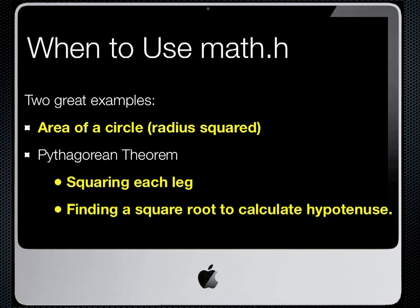Here are some examples of simple functions from math.h that we will use on a regular basis. The first one finds the absolute value of an integer. In this case, the integer x would be equal to the absolute value of y. In the second example, the decimal number x — float x — would be equal to the absolute value of y, where y would also be a float or decimal number.